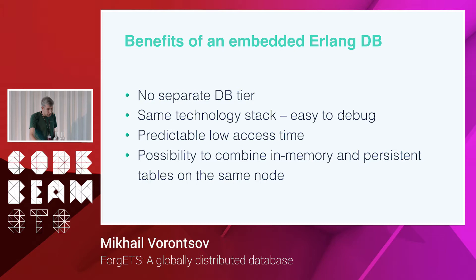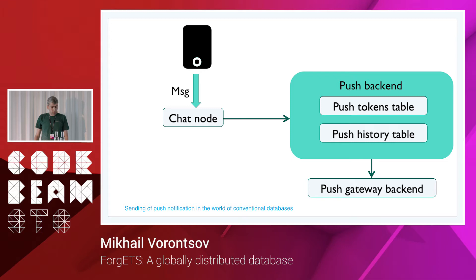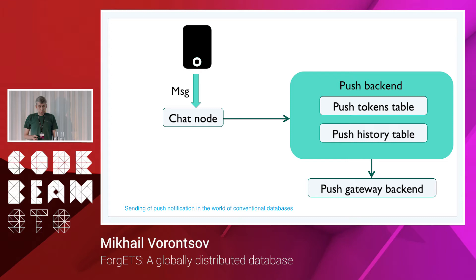Let's look at an example of a problem we deal with at WhatsApp. If you send a message to a user and the recipient is offline, we need to send a push notification to wake up their phone, which will then log in and pull the messages. The sender sends a message via chat nodes. To send a push notification using a conventional database, first you need a push token for that user, so you make a round trip to the push tokens database. Then you need to decide whether to send the push notification, because if the user just received a message, you want to give them some time to connect.